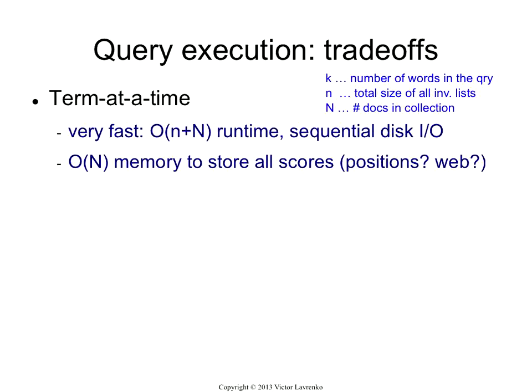So what's the downside? The downside is you actually need to store that array. That big N — it doesn't seem like a big deal, and it's not a big deal for the coursework, but if you're doing it on the web or if you're doing positional indexing, that becomes a bit of an issue. Because that is something that must be in main memory. You cannot store that on disk, otherwise the algorithm doesn't work. If you've got 40 billion pages, that's 40 billion times 4 bytes per float. That's a lot of memory, so you can't have that on a single machine anymore. So that's the downside.